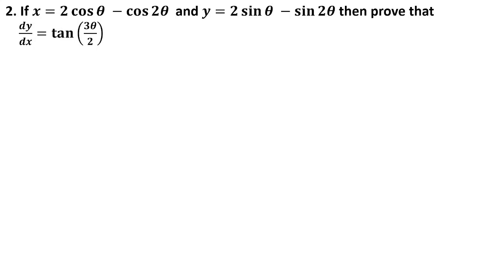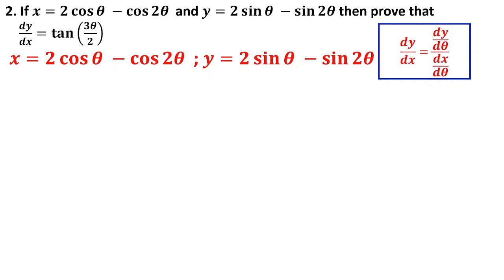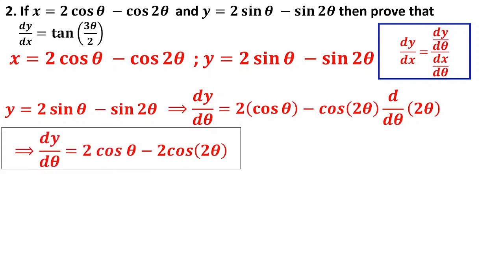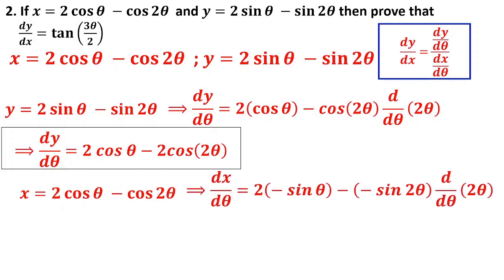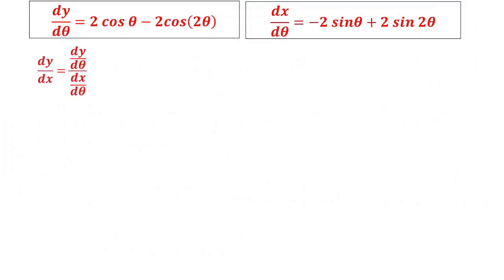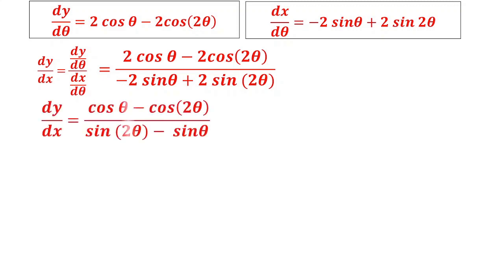Problem 2: x and y are given in terms of θ. We need to prove something, so we do simplification. dy/dx = (dy/dθ) / (dx/dθ). Differentiating y with respect to θ: dy/dθ = 2cos θ − 2cos 2θ (using chain rule for sin 2θ). Differentiating x with respect to θ: dx/dθ = −2sin θ + 2sin 2θ. Dividing and cancelling the factor 2, we get dy/dx = (cos θ − cos 2θ) / (sin 2θ − sin θ).